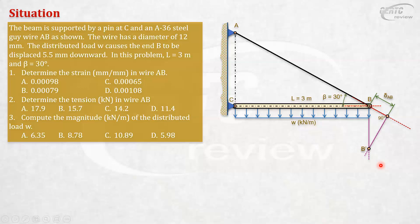Let's work with the angles. This is 30 degrees, so this should be 60 degrees, and this angle here is also 30 degrees. Given in the problem is the vertical displacement — the distributed load causes end B to displace downward by 5.5 mm. We can now focus on this right triangle.